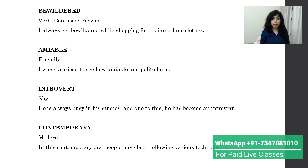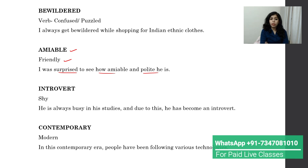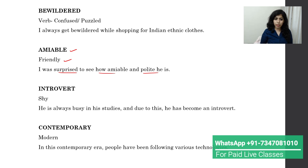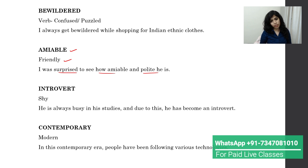Next is 'amiable,' which means friendly. For example: 'I was surprised to see how amiable and polite he is.' Whenever you want to say someone is very friendly, you can say 'how amiable he is.' You can say either 'how amiable and polite is he' or 'how amiable and polite he is.'